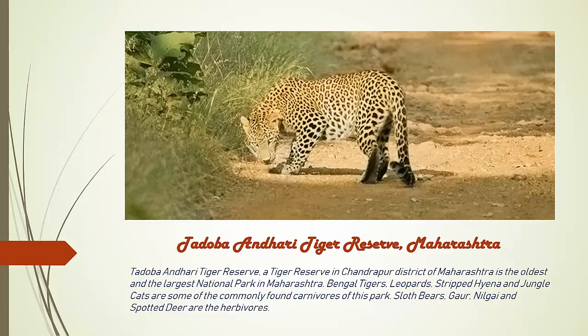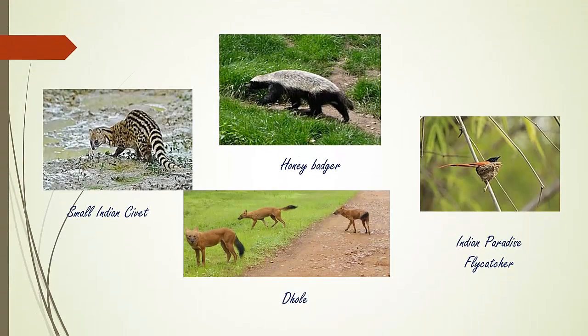Tadoba-Andhari Tiger Reserve is located in Chandrapur district of Maharashtra. It is the oldest and largest national park in Maharashtra. Examples of wildlife include Bengal Tigers, Leopards, Striped Hyena, Jungle Cats, Spotted Deer, Sloth Bears, and Carnivores. Additional examples include Small Indian Civet, Honey Badger, Dhole, and Indian Paradise Flycatcher.